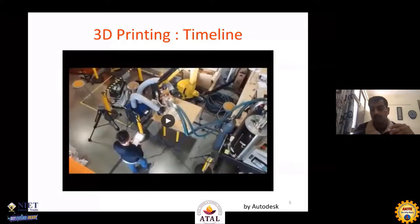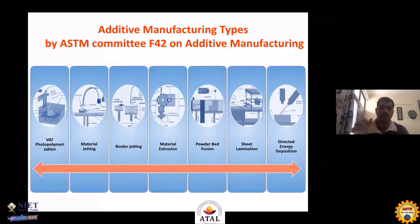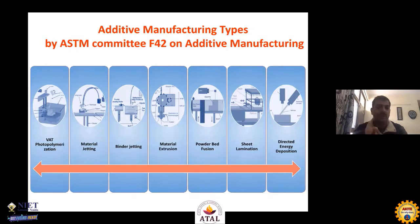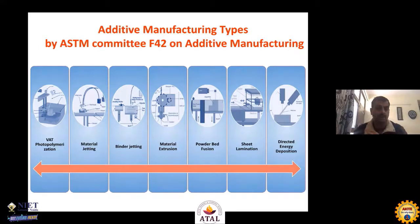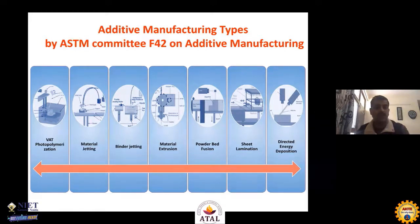Recently, we can see the application of 3D printing in space. NASA is working in this domain — instead of carrying large inventory in space shuttles, they use 3D printing to build spare parts on-demand. The same concept can apply to submarines. As per ASTM's F42 committee, there are seven standard classifications of 3D printing technologies: vat photopolymerization, material jetting, binder jetting, material extrusion, powder bed fusion, sheet lamination, and direct energy deposition.